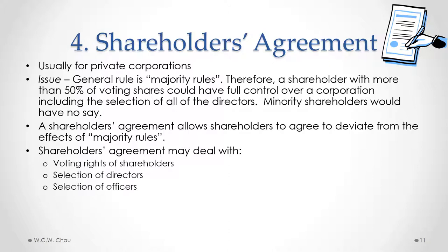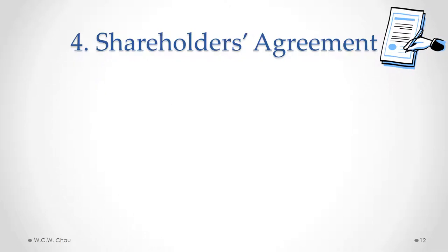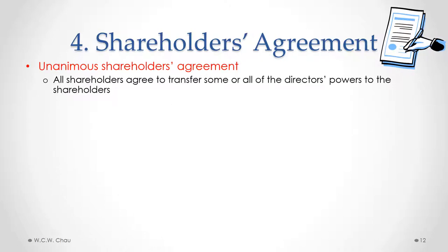The shareholders agreement could also deal with the selection of officers — for example, specifying that one of the shareholders be the CEO. It would also include various requirements for shareholder approval: what types of decisions need to be approved by shareholders and by what percentage. It could also include restrictions on the transfer of ownership of shares. With a unanimous shareholders agreement, all the shareholders could agree to transfer some or all of the directors' powers over to the shareholders, covering the high-level supervision and management of the corporation.